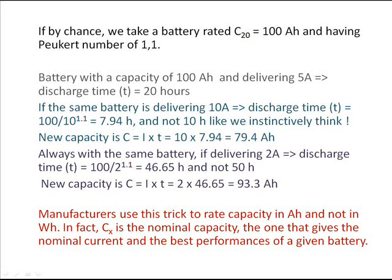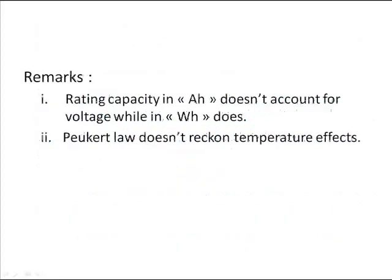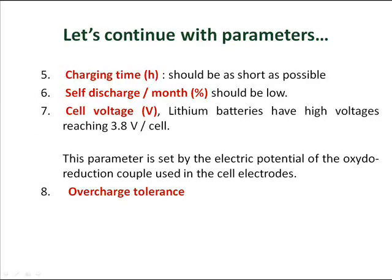C-X is the nominal capacity — the one that gives the nominal current and the best performances of a given battery. Some remarks: the rating capacity in ampere-hour doesn't account for voltage, while watt-hour does. Additionally, Peukert's Law does not account for temperature effects.